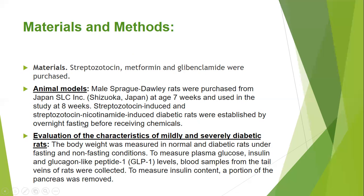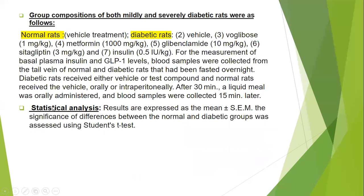We evaluate the characteristics of mildly and severely diabetic rats by measuring body weight, blood plasma glucose level, insulin, and glucagon-like peptide. Blood samples are collected from the tail veins of the rats, and a portion of the pancreas is taken to measure the insulin content.